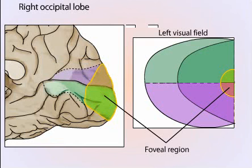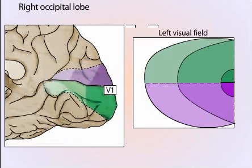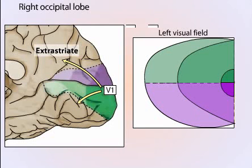Inputs from the two eyes converge at the cortical level, making binocular effects possible. The primary visual cortex, V1 or striate cortex, projects to other areas of the cerebral cortex, referred to as extrastriate, that are involved in complex visual perception.